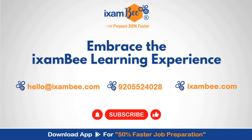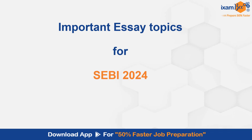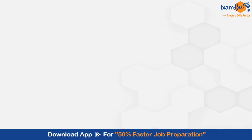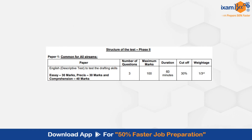Hello everybody, welcome to iExambi MD, the iExambi learning experience. In this video, I have come to share an important essay topic list for the SEBI 2024 exam. Paper one is scheduled for 31st August and there are three questions in the descriptive English paper: essay of 30 marks, precis of 30 marks, and comprehension of 40 marks. You will be given 60 minutes, 30% is the cutoff, and one-third is the weightage. We will directly go through the important essay list.